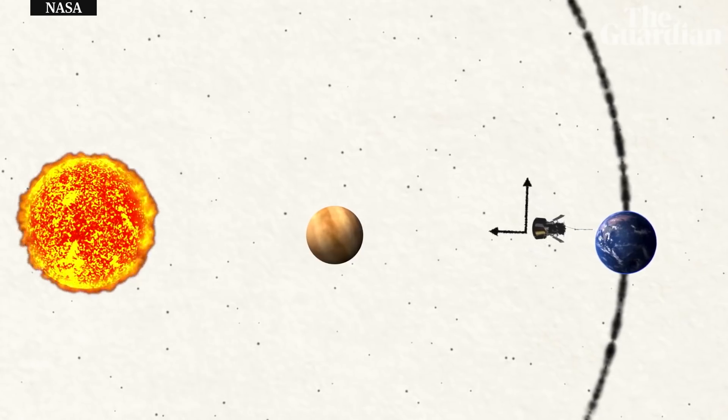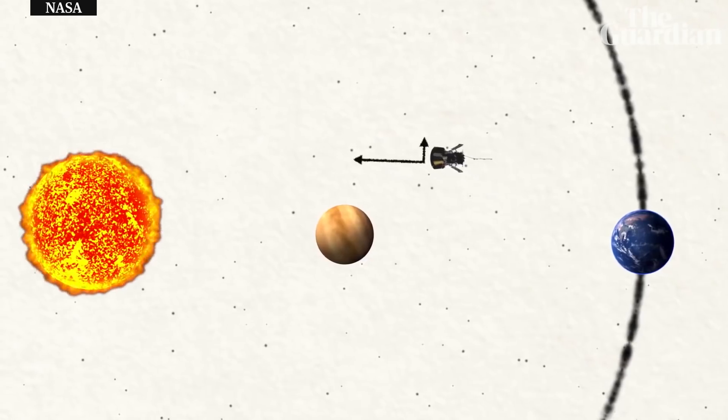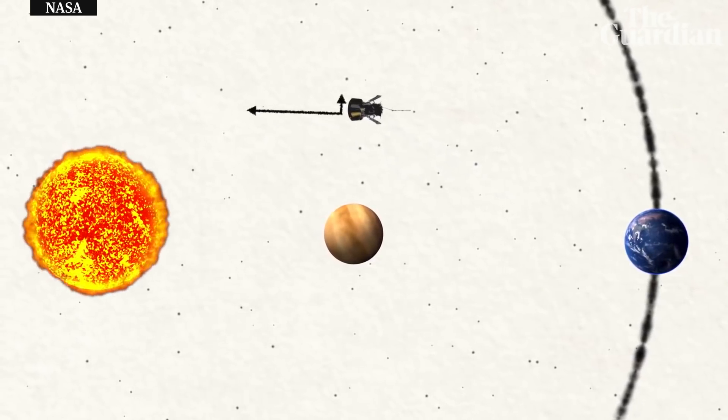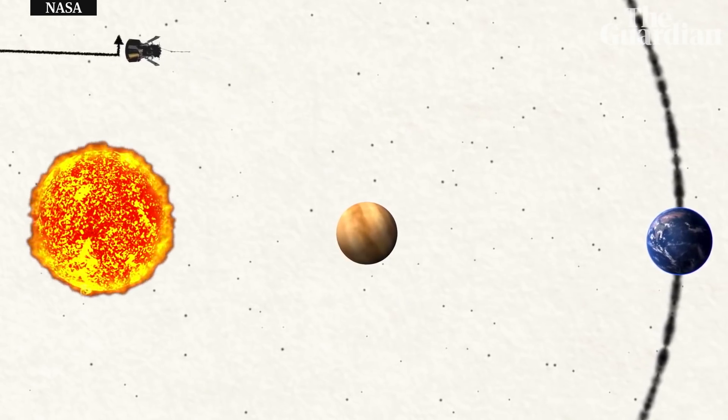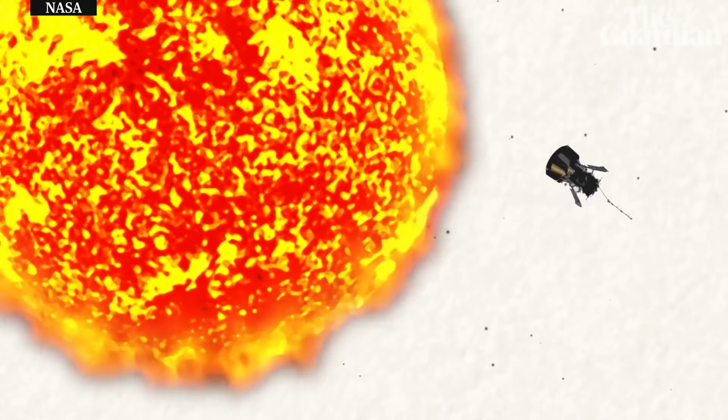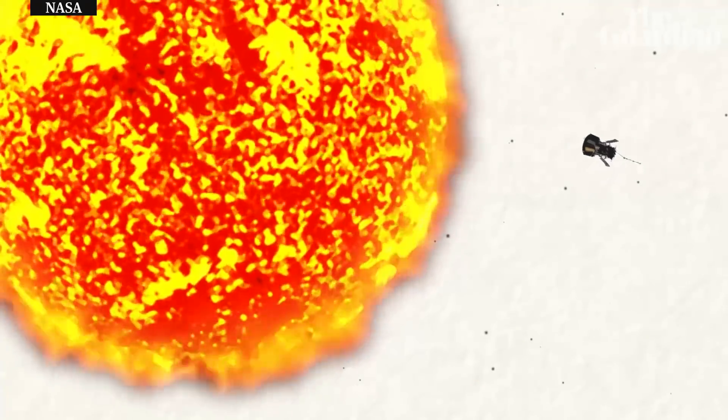When it finally does make its closest approach to the Sun, Parker Solar Probe will have lost much of its sideways speed, but gained a great deal of overall speed thanks to the Sun's gravity. Parker Solar Probe will hurtle past the Sun at 430,000 miles an hour, the very first human-made object to get that close.